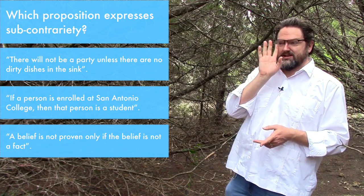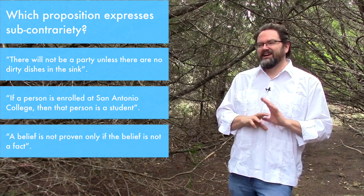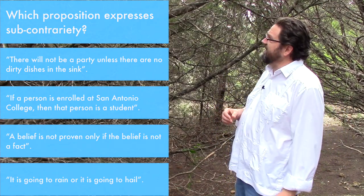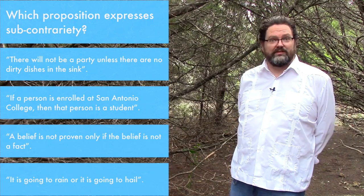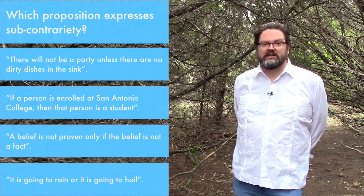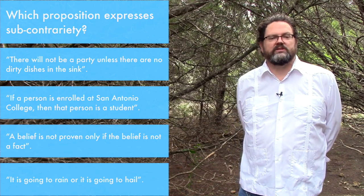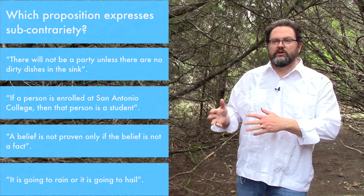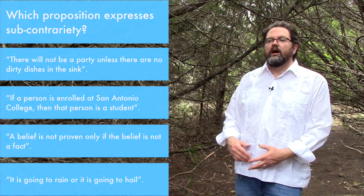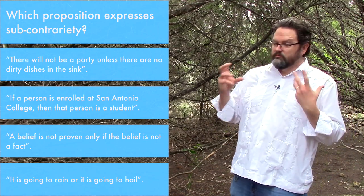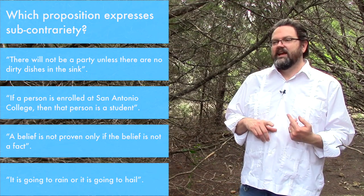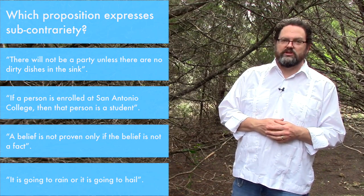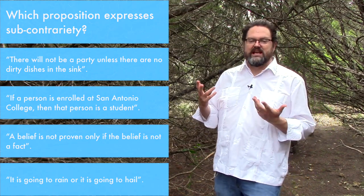The last option: 'Either it is going to rain, or it is going to hail.' The component propositions are 'it is going to rain' and 'it is going to hail' — both atomic propositions, neither is a negation. The connective is either-or, which expresses the subcontrary truth relationship. So this last option is the answer expressing subcontrary.